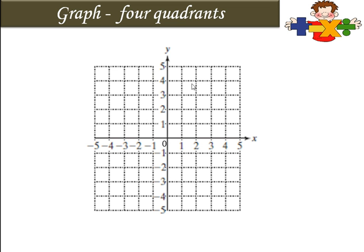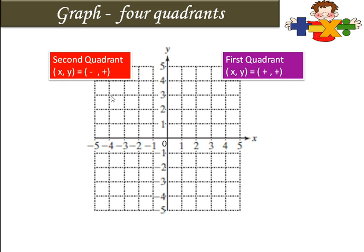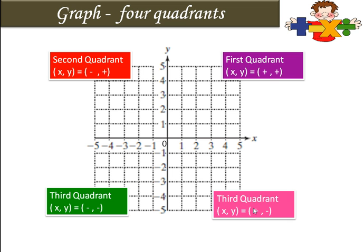It is called the origin and it divides the graph into four quadrants. This part is the first quadrant, where x and y both are positive. This second part is called the second quadrant, where x is negative and y is positive. This is the third quadrant where x and y both are negative, and this is the fourth quadrant where x is positive and y is negative. We will represent the linear equation on this graph.